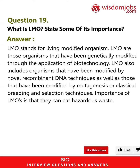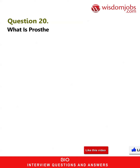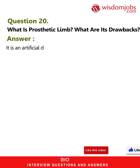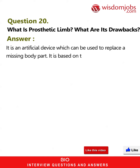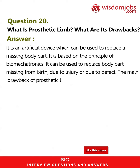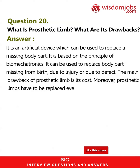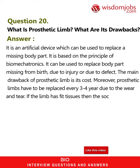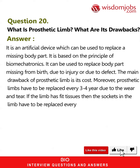Question 20: What is a prosthetic limb and what are its drawbacks? A prosthetic limb is an artificial device used to replace a missing body part, based on the principle of biomechatronics. It can replace a body part missing from birth, due to injury, or due to defect. The main drawback is its cost. Additionally, prosthetic limbs must be replaced every 3 to 4 years due to wear and tear, and if the limb has fit tissues, the sockets must be replaced every month.